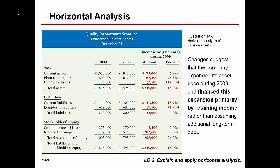You want to see what percent that change is of the original base year number — 2008. So if you divide by $945,000, that's telling you that our current assets grew 7.9% over that one-year period.